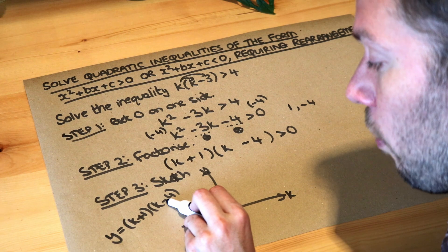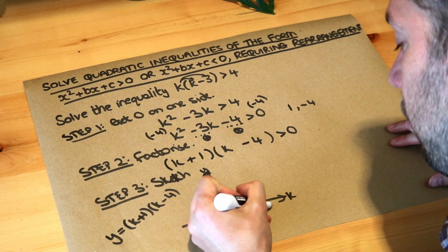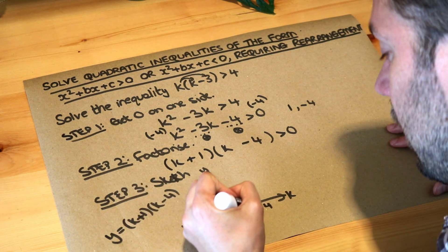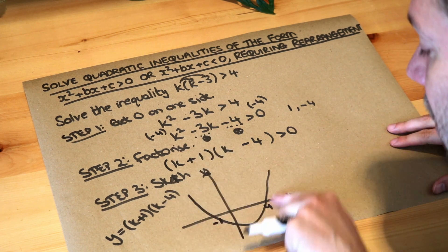And if k was four, we'd have four minus four which would be zero, and that would make y zero. So we've also got four. And then quadratics look like this. If it's a positive quadratic where the square term is positive, it'll be a smiley face shape.